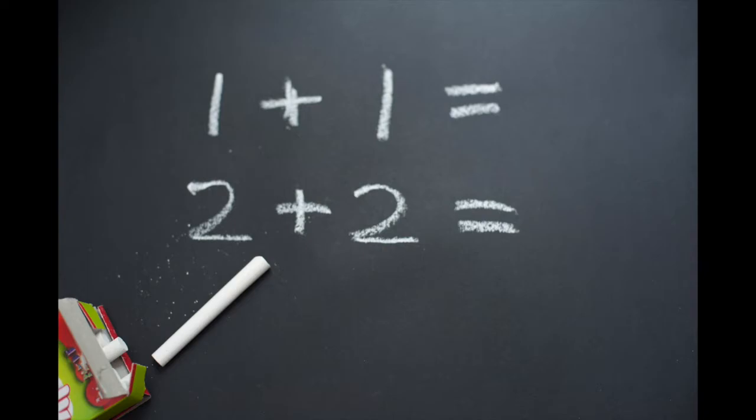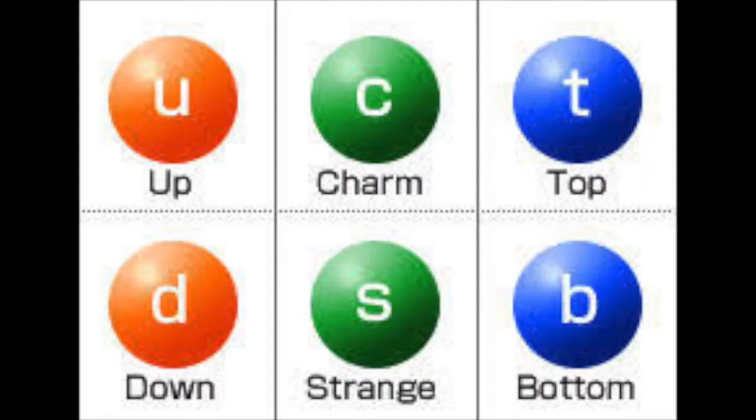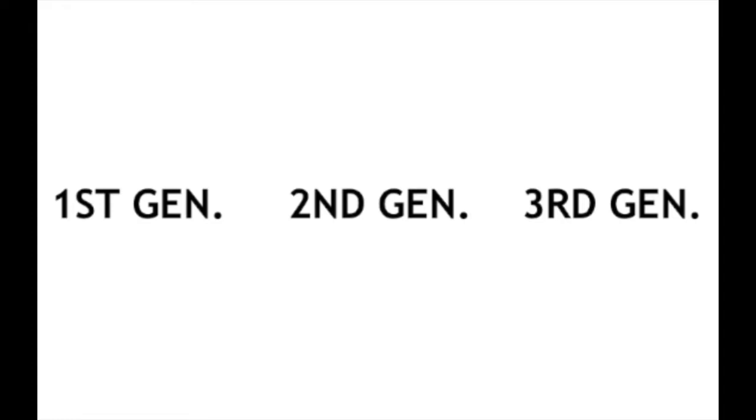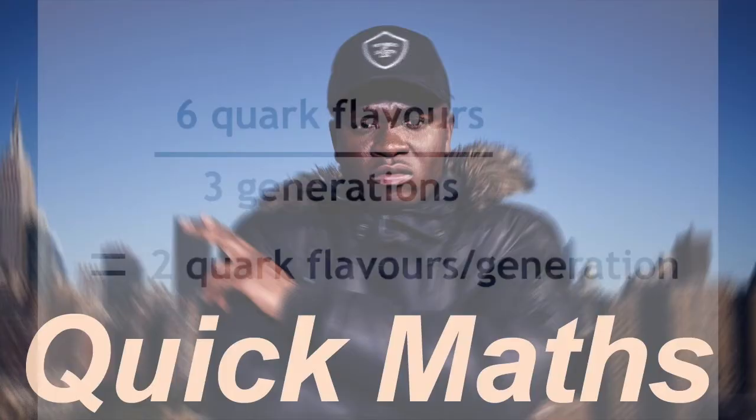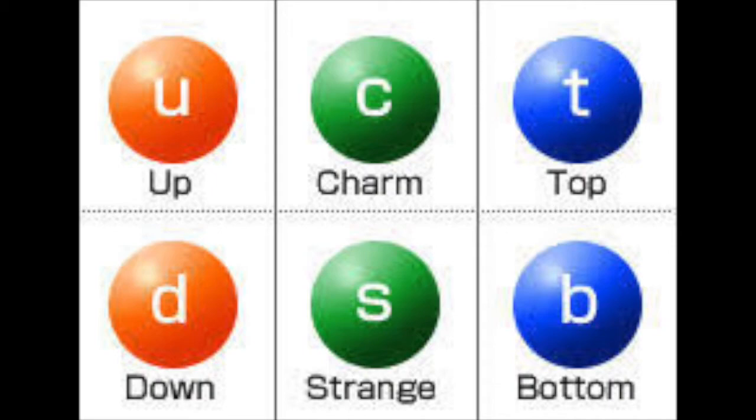Now, time for some super simple math. So there are six flavors of quarks and three generations of particles in the universe. And since each generation has the same number of quarks, 6 divided by 3 is 2, that's quick math.